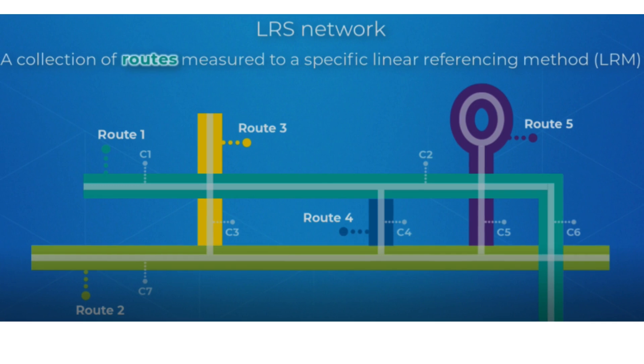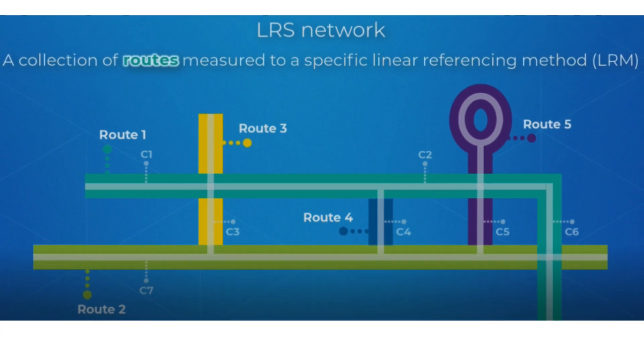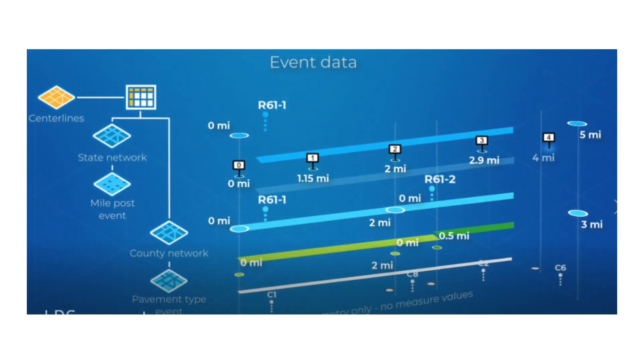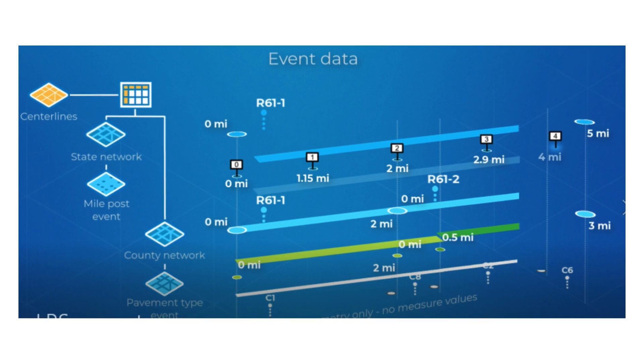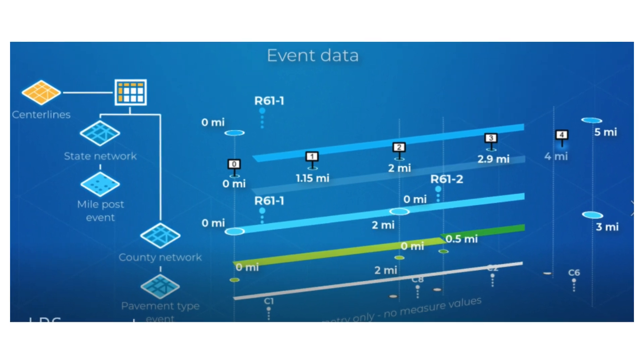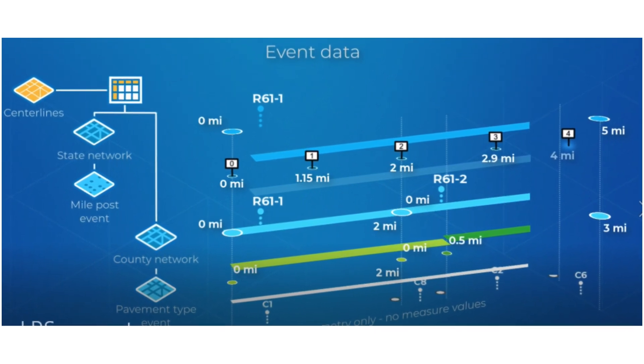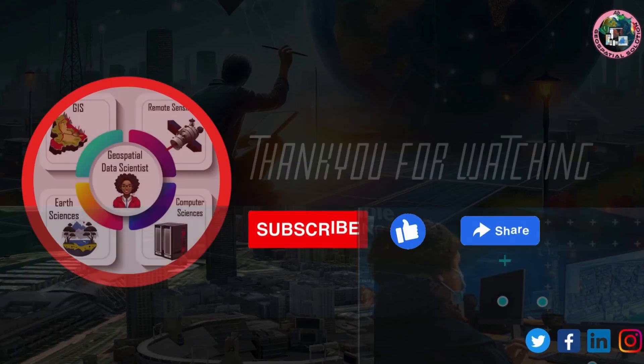Centerlines: The LRS Information Model supports the use of a single polyline feature class, called centerlines, to store the geometry of all the routes.